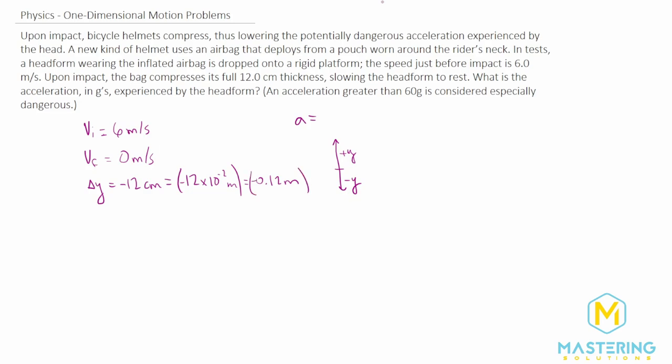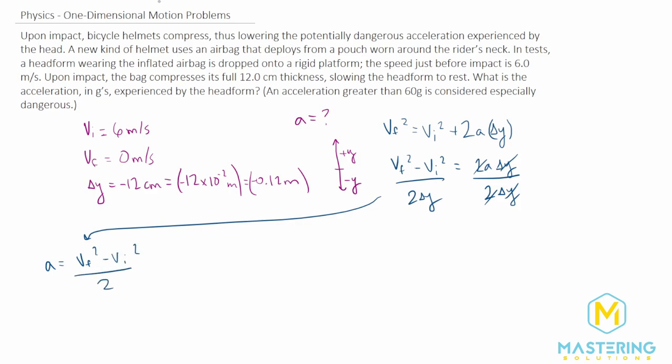Now we need to find a kinematic equation that has all these variables in it, including the one we're trying to solve for. The one we'll be using is V final squared equals V initial squared plus 2A times delta Y. Now we're trying to solve for acceleration, so let's isolate it. V final squared minus V initial squared equals 2A delta Y. Now we'll divide both sides by 2 delta Y to isolate the acceleration.